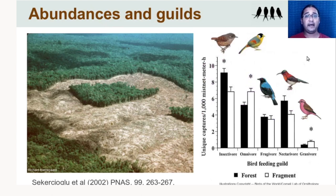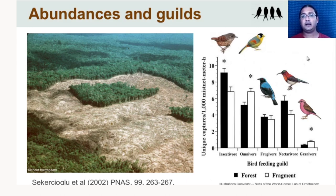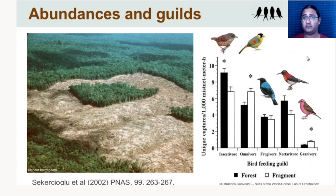You can also compare communities by functional guilds — for example, asking whether the density of insectivorous birds differs in a small fragmented patch compared to a large forest. Based on densities of insectivorous bird species divided into their feeding guilds, forests (black bars) have higher densities of insectivores than forest fragments — small, isolated patches of forest. You can use density and abundance estimates in many ways to compare bird communities, guilds, and assemblages across different habitat types and across time.